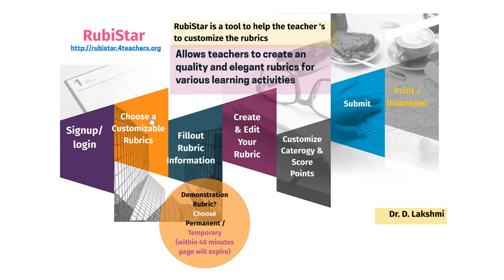Once you log in or open RubyStar, choose a customizable rubric. Fill out the rubric information — we will be discussing the real demonstration shortly. Within the rubric information you may have to provide the name of the subject, your teacher name, and other details. While filling the rubric information we have to be very careful. It will ask whether your rubric should be set in permanent mode or temporary mode. Permanent will allow you to reuse it or revisit it within a week. Temporary will be available only 40 minutes, then the page will expire. Then create and edit your rubric, customize the category and the score points — every category, what score point you would like to award. Once you submit, the rubrics are ready. Either you can print it or download it.